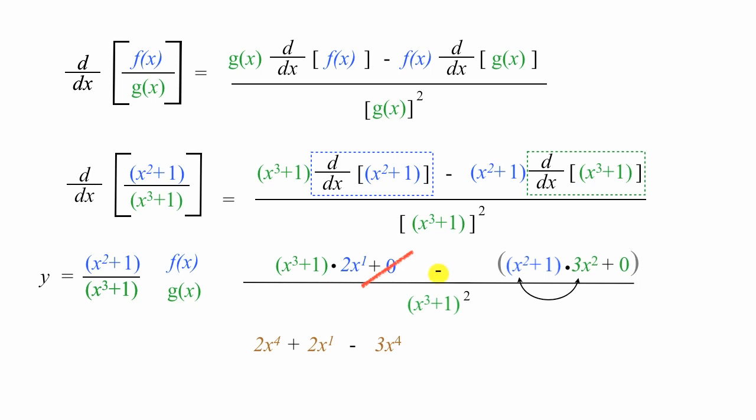Now I'm going to subtract the next thing, too. So I'm going to take 1 times 3 times x squared, which gives me minus 3 times x squared. And I'll drop the 0 again. Divided by x cubed plus 1 squared.